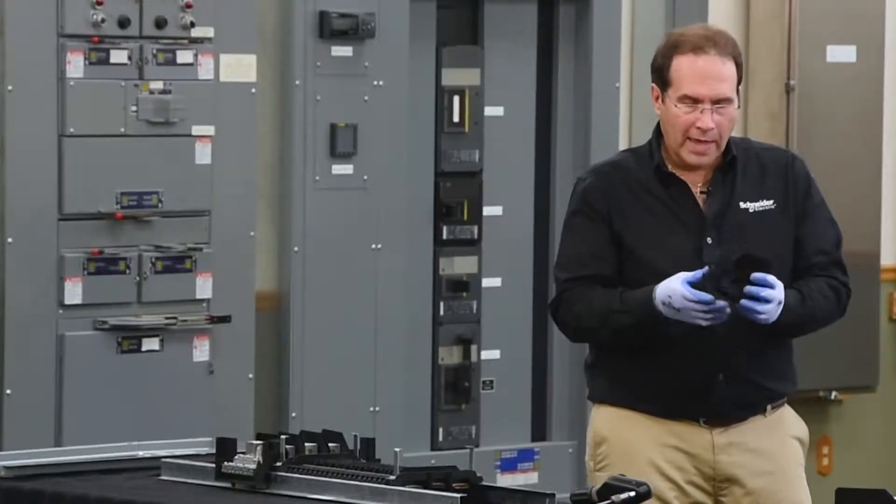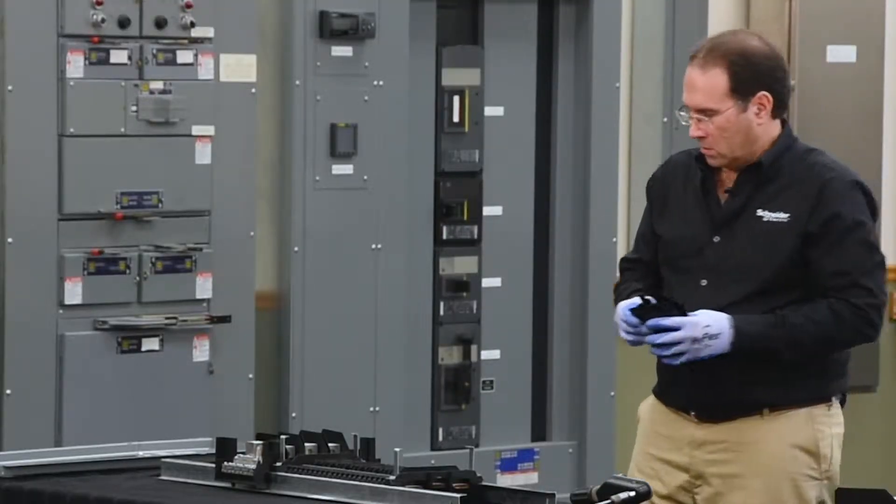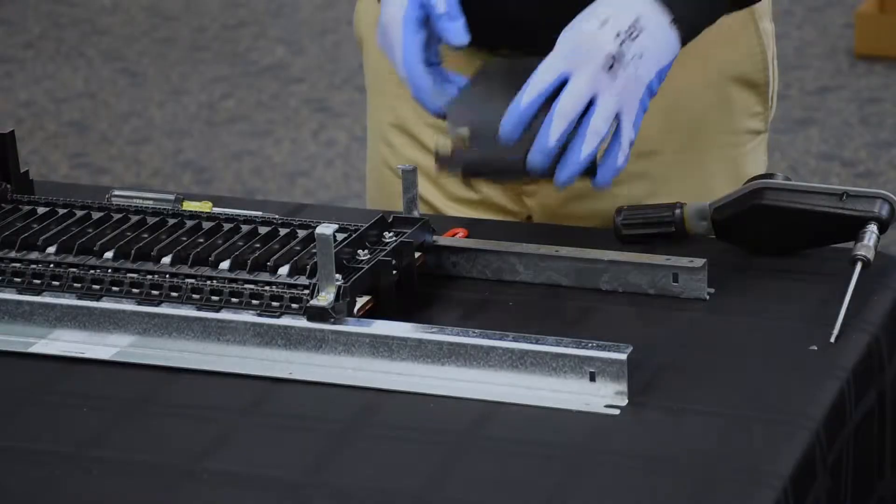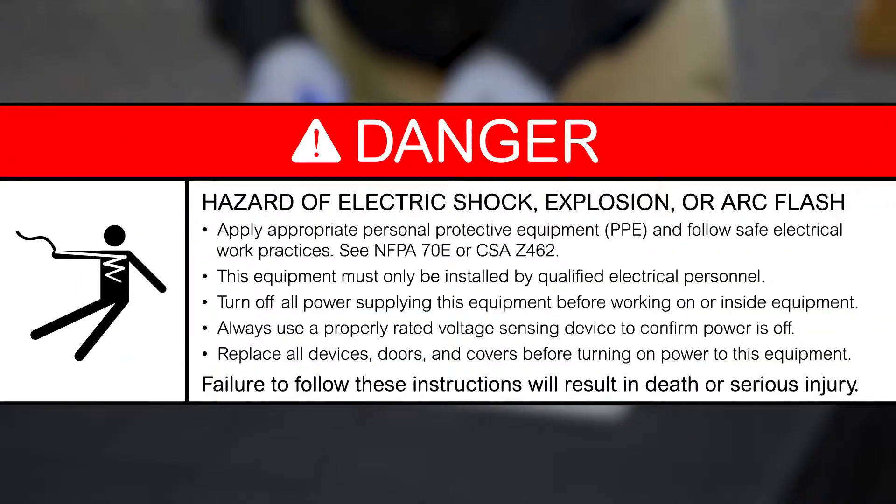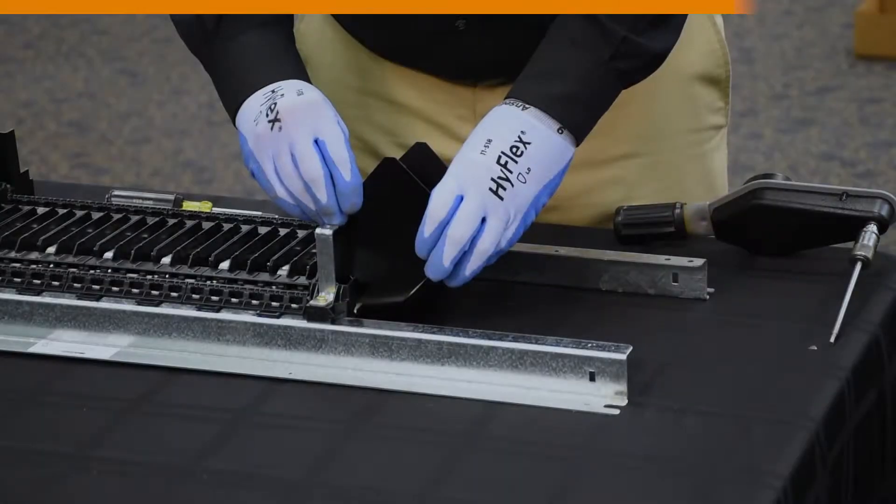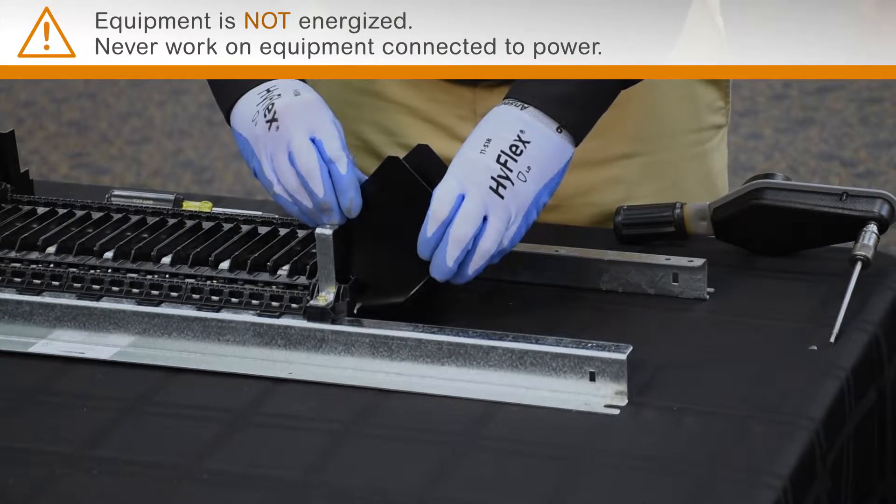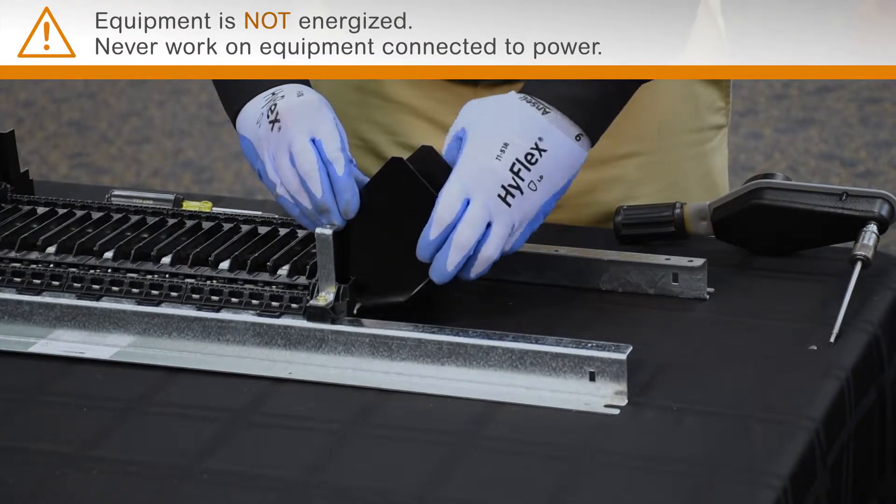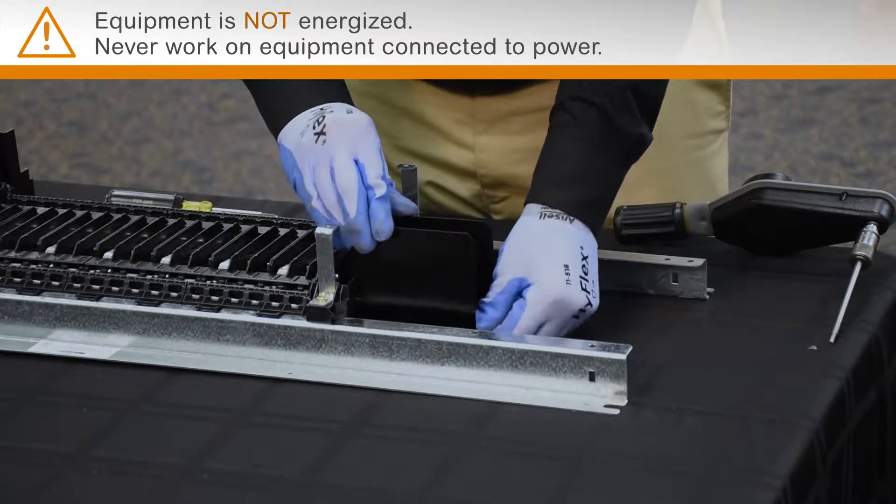Next, we'll install the A phase and C phase lug barriers. These install by clipping over the top of the end cap and rotating them down into position.